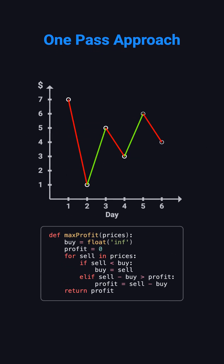Let's walk through the example again. We use three variables. Buy tracks the lowest price so far and starts at infinity. Sell is the current day's price. Profit keeps the maximum profit so far and starts at zero. On day one, the price is seven. Buy is seven, and profit is zero.